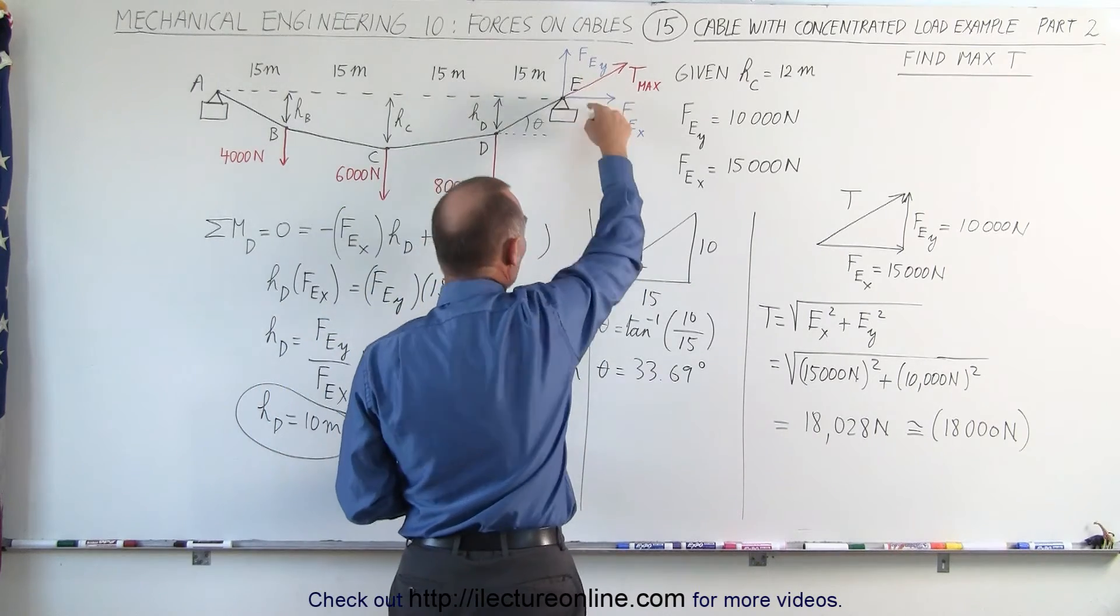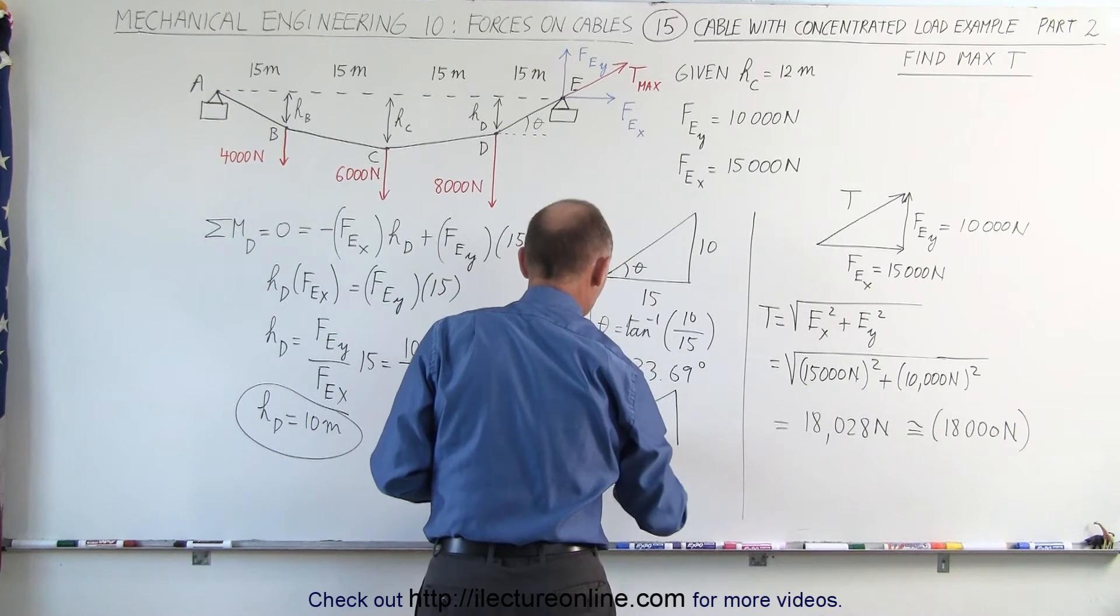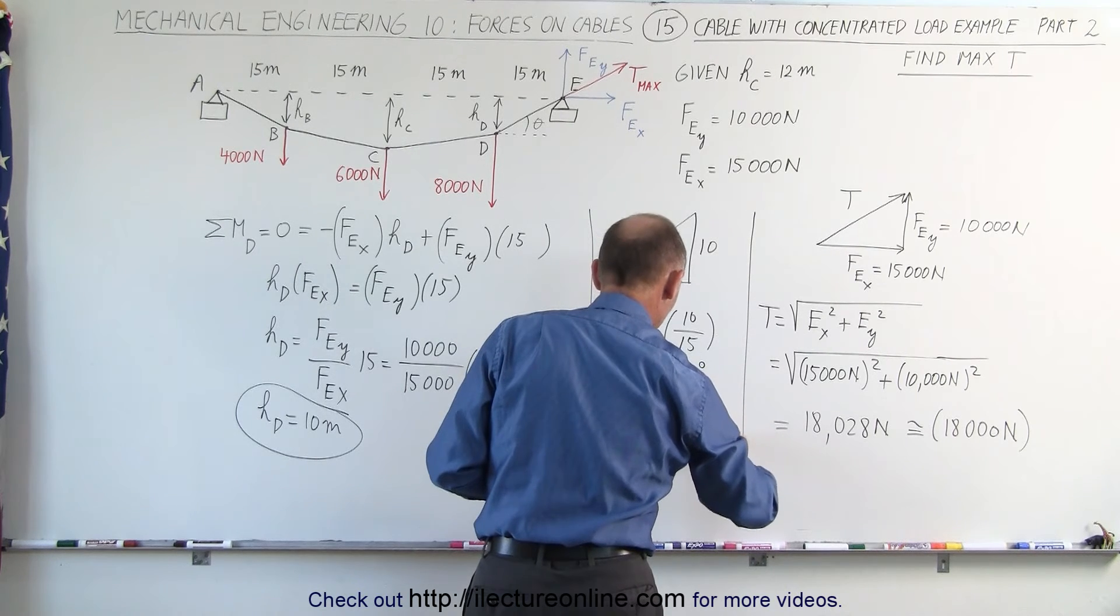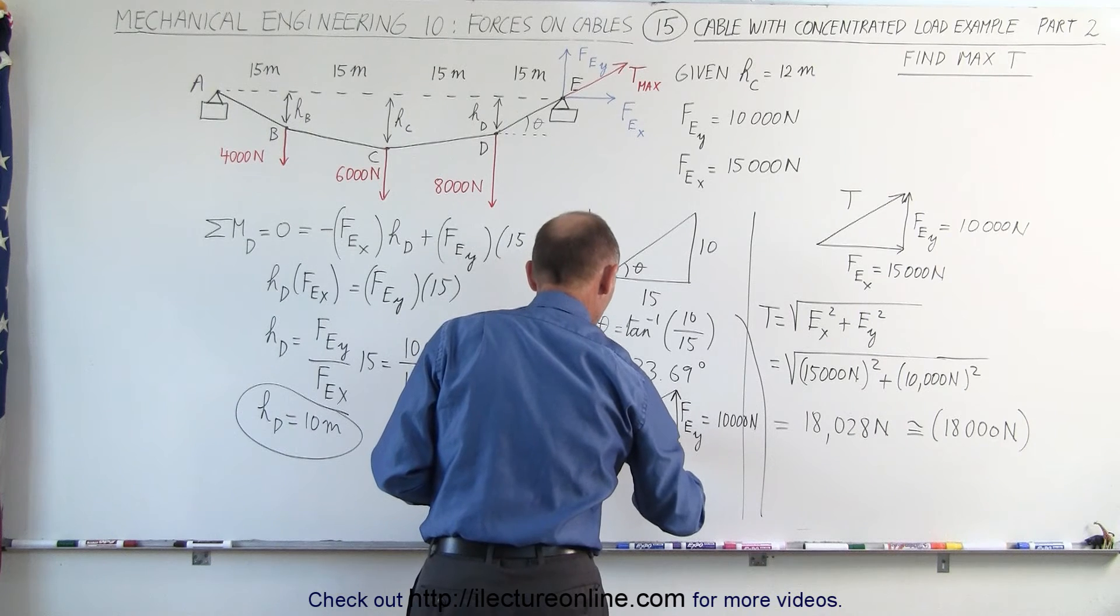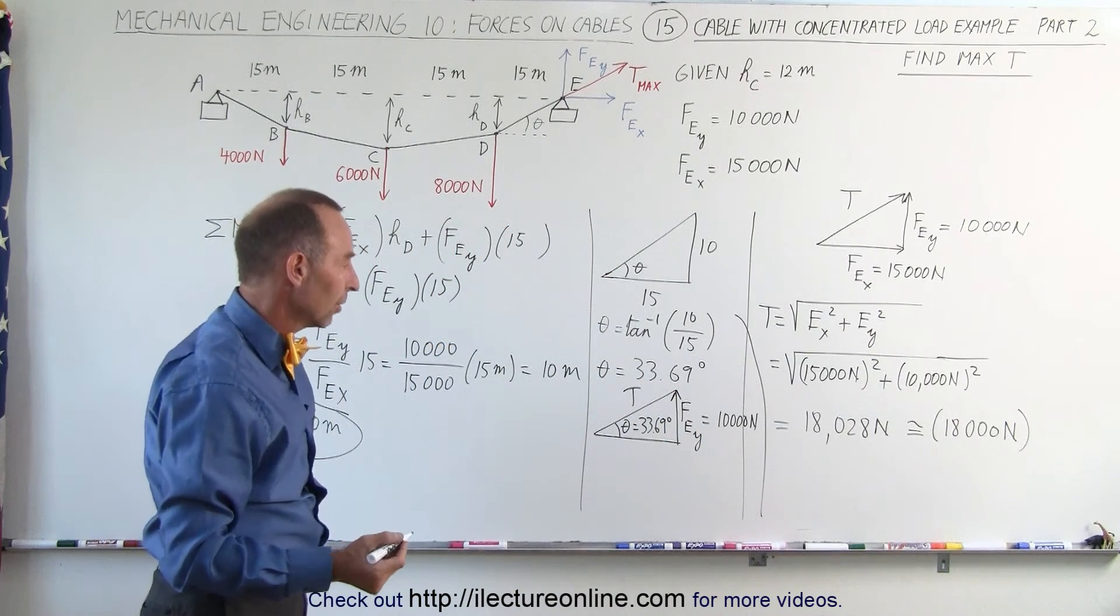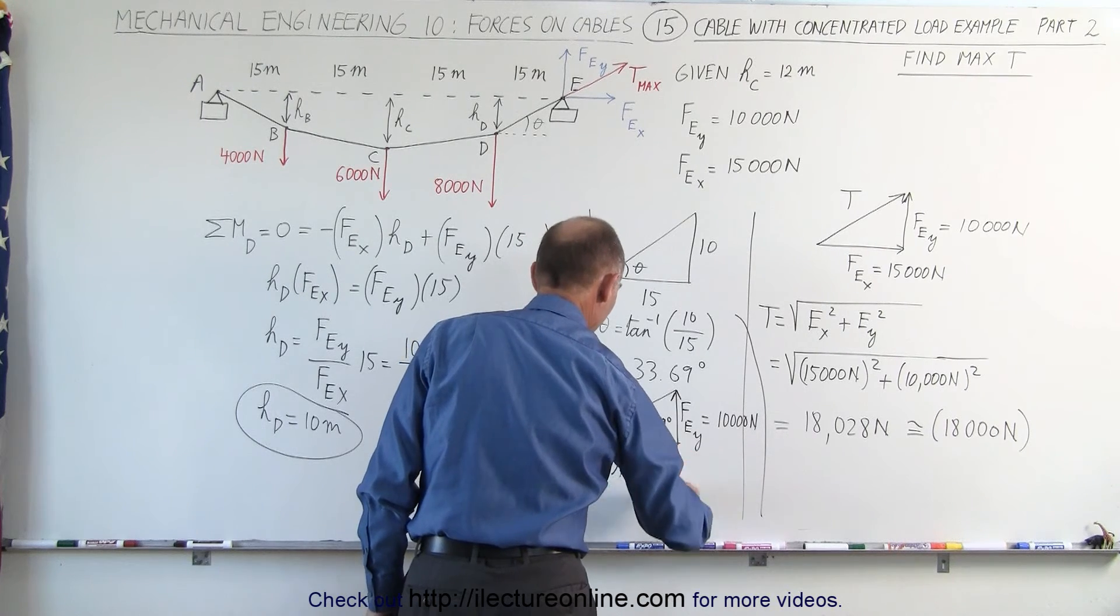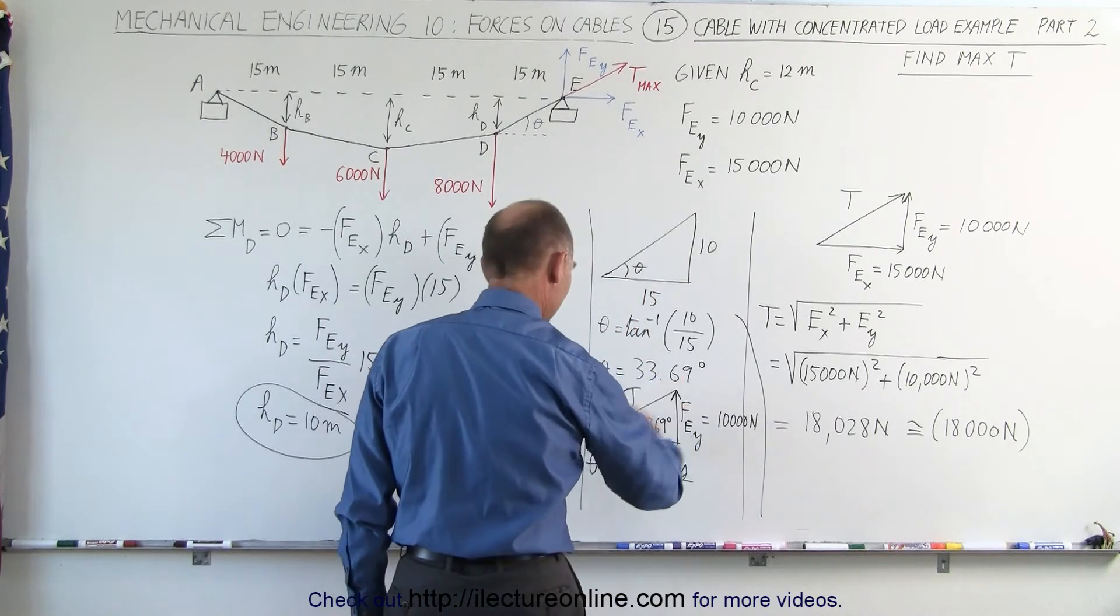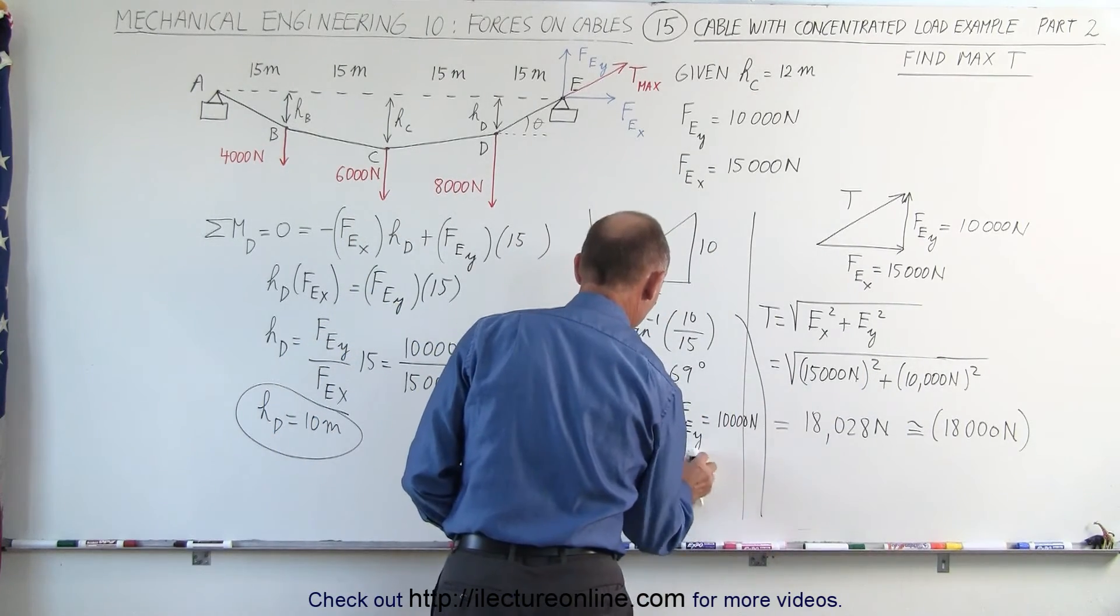Now, to find the value for T. Since we know the angle right here, and let's say that we only know one of these two values, but we do know the angle, then we can say that we have a triangle here. Let's say we have the opposite side, E sub Y. That's the force at E in the Y direction, is equal to 10,000 newtons. Like so. And we know the angle, which is theta equals 33.69 degrees, and let's say we're looking for T. Of course, we know that the sine of theta, or I can go right away to the inverse sine, theta is equal to the inverse sine of the opposite side, F E sub Y, divided by the hypotenuse, which is T. Oh, that's not going to help us, is it? That's not what I want. I don't want the inverse sine. I actually want the sine. All right, let's start this again.